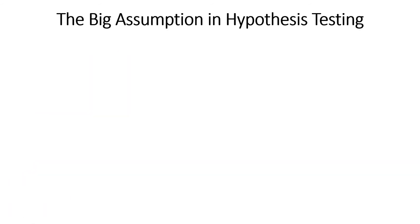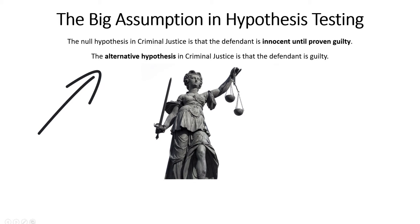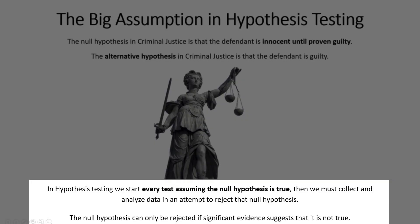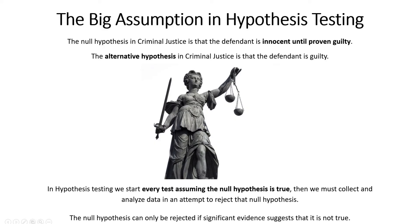The big assumption in hypothesis testing uses the analogy of the U.S. criminal justice system. In the U.S., the null hypothesis is that every defendant is innocent until proven guilty, and the alternative hypothesis is that the defendant is guilty. The only way we conclude guilt is if we have sufficient facts, data, and evidence to prove the alternative hypothesis is true. That same idea applies in hypothesis testing — we start every test assuming the null hypothesis is true, which allows us to create a rejection region to either reject the null or fail to reject it. We have to collect data to prove the null hypothesis is false.